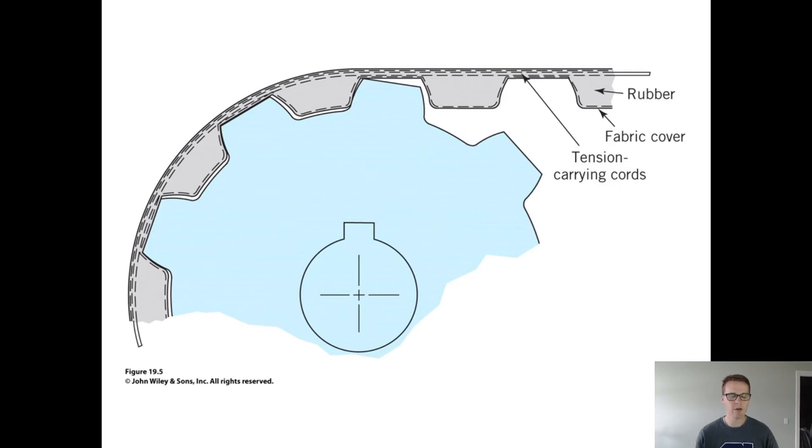We could also talk about timing belts. Timing belts are a variation on a belt, where we have gear-looking teeth, both in the pulley that the belt is wrapped around, and on the belt itself. That pulley, or those teeth, allow for there to be no slippage between the belt and the pulley itself, and therefore allows them to stay in sync with each other. Hence, this timing belt name.